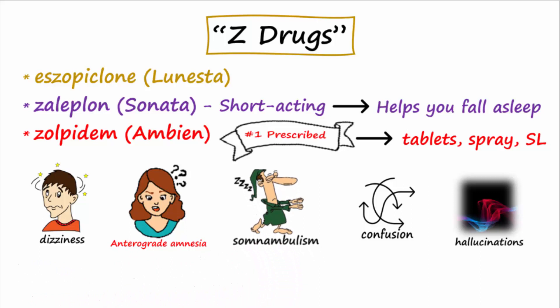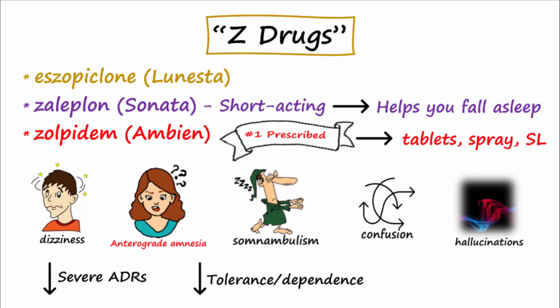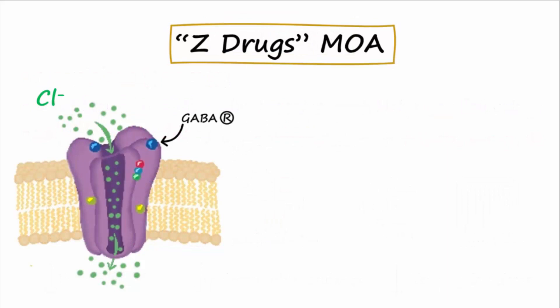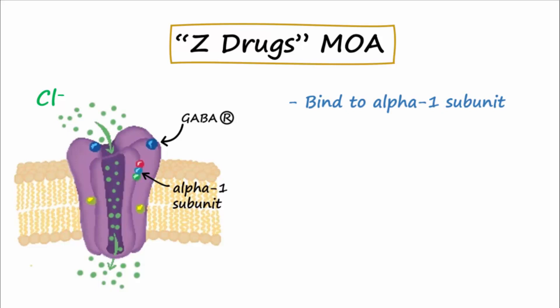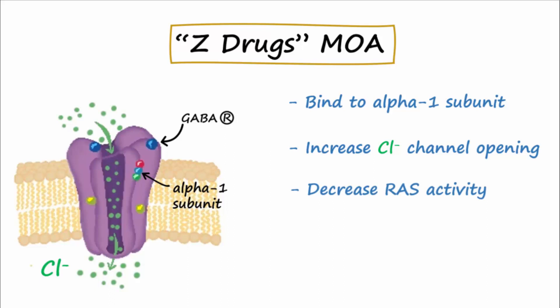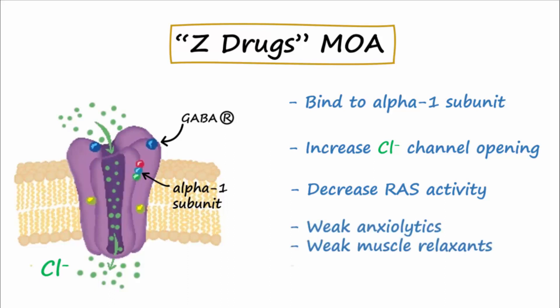In most cases, all three of these drugs are favored over benzodiazepines for sleep because they cause less severe adverse effects, including lower tolerance and dependence, and cause little disruption to the normal sleep cycle. These non-benzodiazepine Z-drugs bind to alpha-1 subunits of the GABA-A receptors on pentameric chloride ion channels to increase chloride channel opening, which decreases reticular activating system activity in the brainstem, causing a strong hypnotic effect. Unlike benzodiazepines, the Z-drugs are weak anxiolytics, weak muscle relaxants, and weak anticonvulsants.